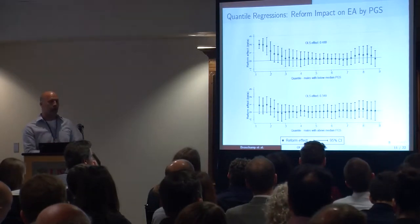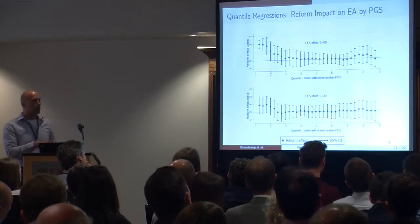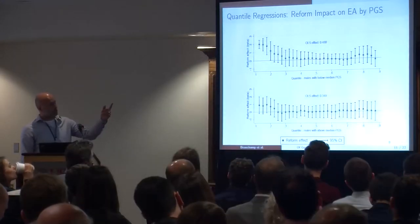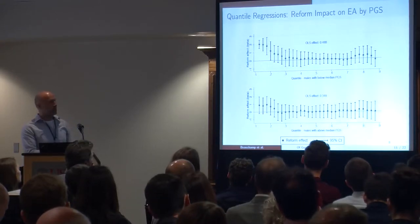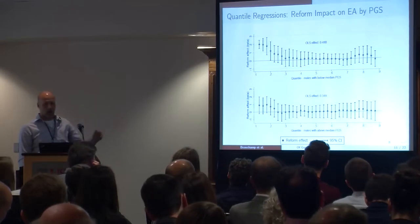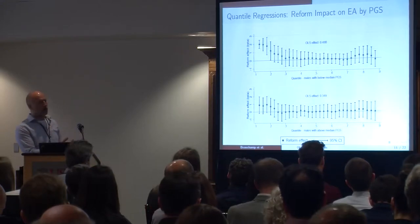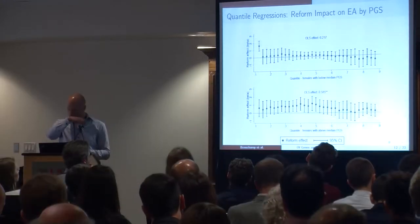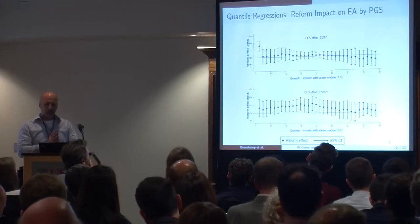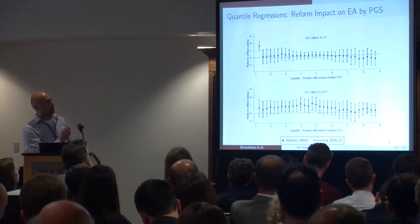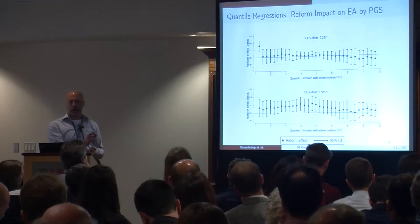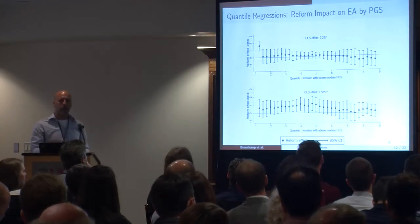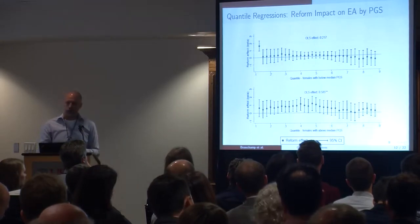We test whether this pattern is related to ability by dividing the sample between low and high polygenic score individuals. For males, the compression effect of the reform is mostly confined to low-ability males — those with a below-median polygenic score. More interesting are the results for females: we see strong positive reform effects at the lower end of the education distribution among low-ability females, whereas among higher-ability females, we see ripple effects higher up in the education distribution. These results are consistent with the signaling story.